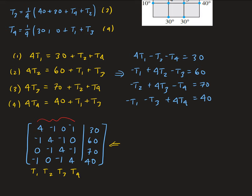This system is in the form A times X equals B. The solution vector X corresponds to the temperature values we're trying to solve for. Later we'll discuss using the matrix inverse to solve such a system, and we'll definitely look at using LU factorization. You can also solve this using row operations and putting it into reduced row echelon form. That is the complete setup for this problem.